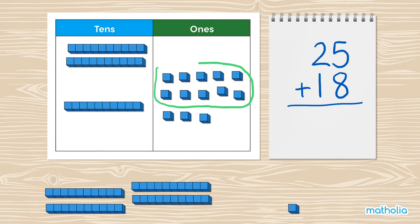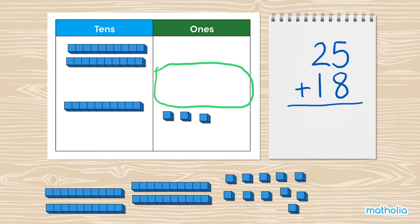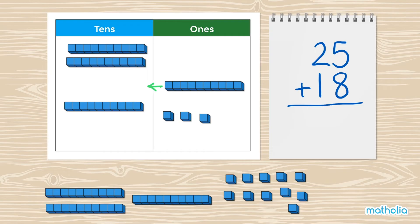Let's replace 10 ones with 1 ten. We can move the 10 block over to the tens column in the place value chart. There are 3 ones left.